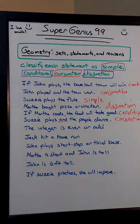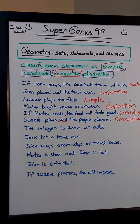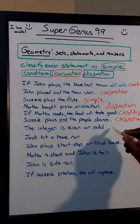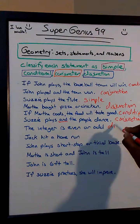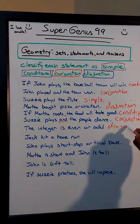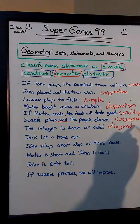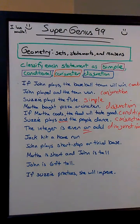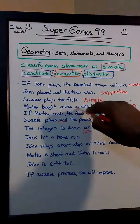How about the next one: 'The integer is even or odd.' Simple, conditional, conjunction, or disjunction? Disjunction — correct. Usually 'or' is the indicator of a disjunction, just like 'pizza or chicken' up here.